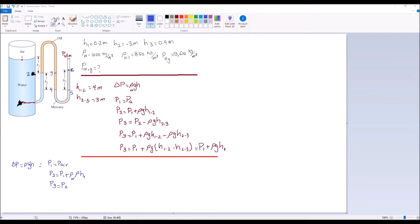Next we have point 4. So from 3 to 4, P4 is equal to, from 3 to 4 we're moving down, we have to add. So it's P3 plus rho, this time density, the fluid is oil. So rho oil GH, in this case from 3 to 4, it's called H2.